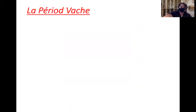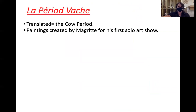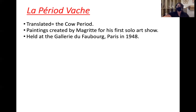Then there was a period in his career where he started making artworks that critics originally called the Période Vache — translated from French into English, this is the cow period. And no, he didn't start painting artworks of cows. These were works he created for his first solo art show, as opposed to group art shows. A solo show is a pretty high point in an artist's career, particularly their first one. This was in 1948 in Paris.